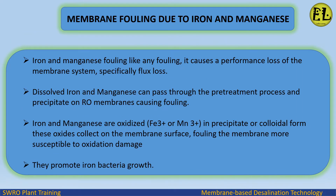Iron and manganese fouling, like any fouling, causes a performance loss of the membrane system, specifically flux loss. Dissolved iron and manganese can pass through the pre-treatment process and precipitate on RO membranes, causing fouling.